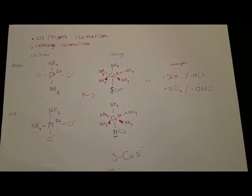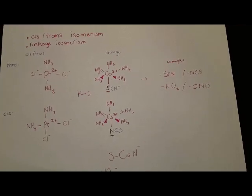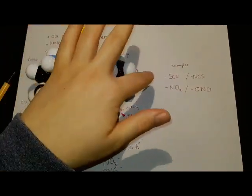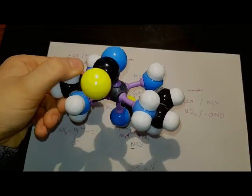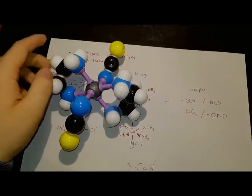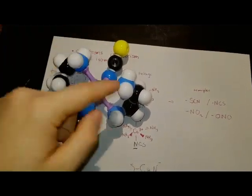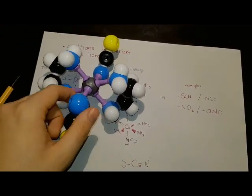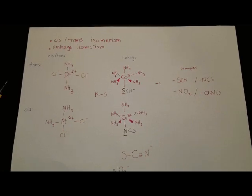It's just like the stereoisomerism in alkenes, for example. Because as we can see here, it's a model of the complex. We have the two ethylenediamines, if we look from here, that are opposite each other. Otherwise, the other ethylenediamine would be bonded here. And also, the isothiocyanates are opposite each other, so it's definitely a trans-complex.